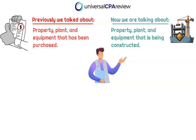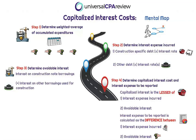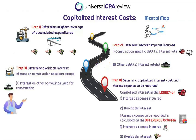This is all about self-constructed property, plant, and equipment, and this is going to heavily emphasize a concept called capitalized interest costs. When in doubt, map it out. We're going to pull out our mental map here, and we have four primary steps to zone in on when it comes to capitalized interest costs. Step one: determine the weighted average of accumulated expenditures. Step two: determine the interest expense incurred. Step three: determination of avoidable interest. Step four: determine the actual interest cost being capitalized and how to determine the interest expense reported on the income statement.